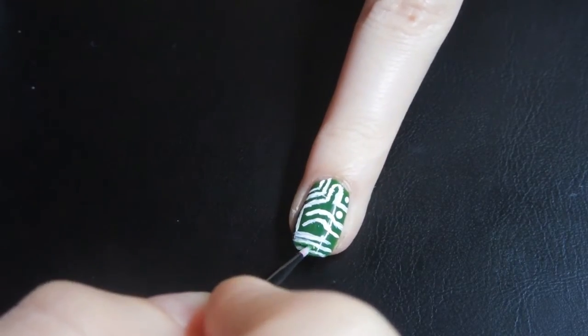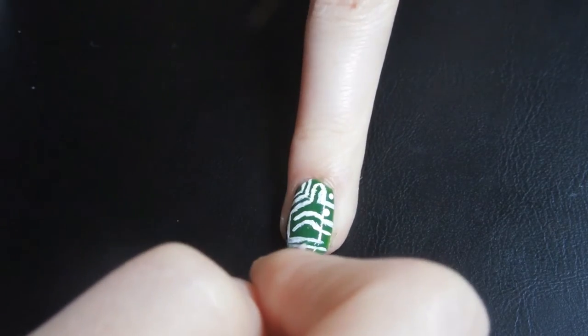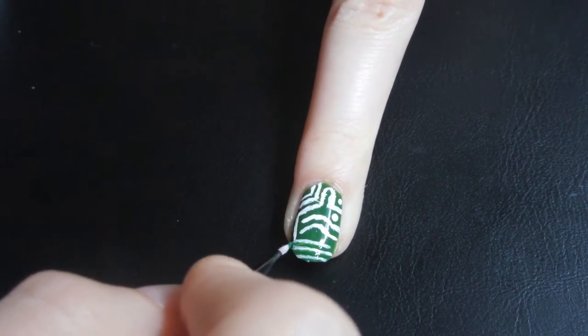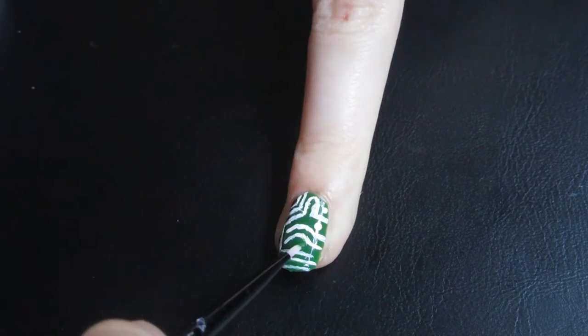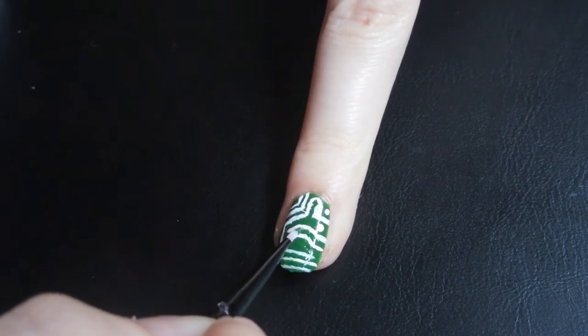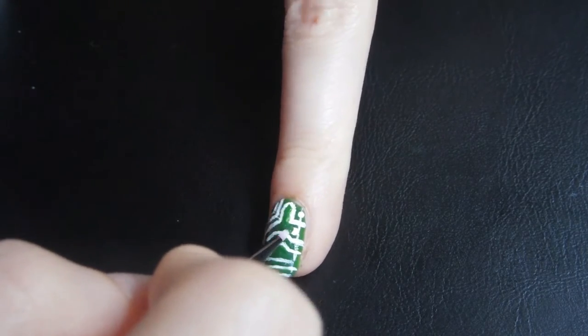As you can see I added some green to make the lines thinner. You have to play with your colors and your lines. Once you're happy with your design you can add some finishing touches and the top coat.